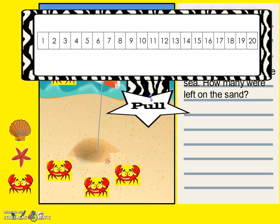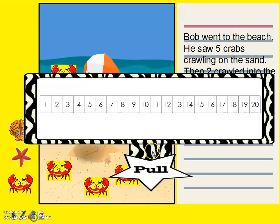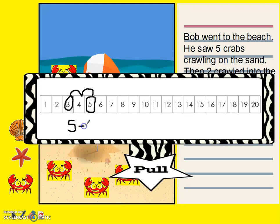Let's show that on a number path. We're going to start off at five — that is the total number of crabs we saw at the beach. Two crawled away, so we're going to count back two. One, two. Our answer is three. There are three crabs left on the sand. Five take away two equals three.